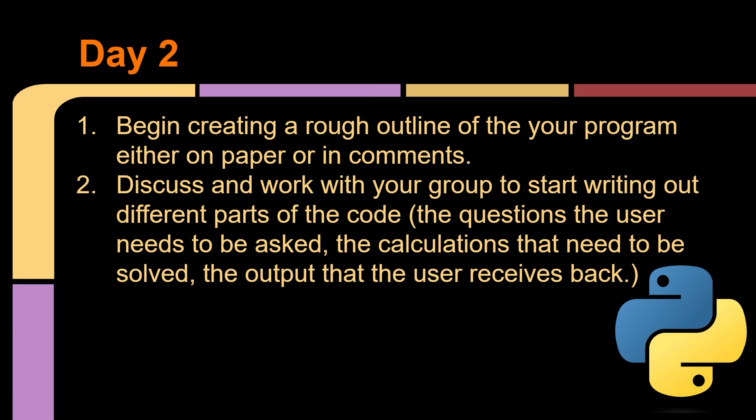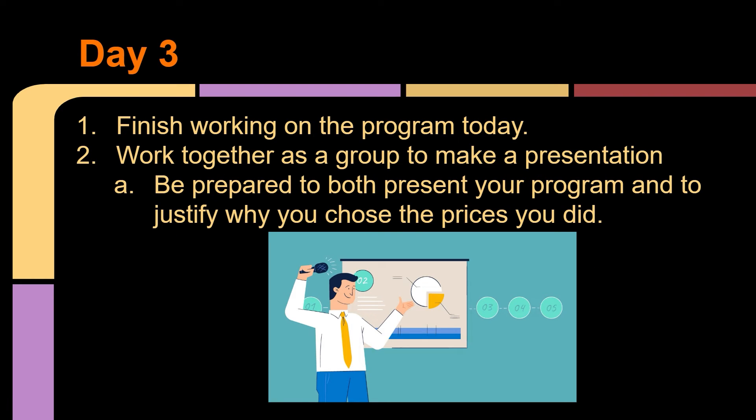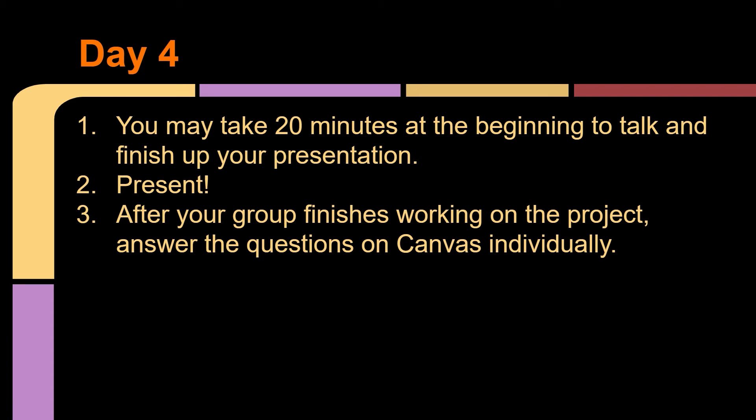Multiple people can work on the same section of code at the same time as well. On day three, finish working on the program. Work together as a group to make a presentation — be prepared to both present your program and to justify why you chose the prices you did. On day four, you may take 20 minutes at the beginning to talk and finish up your presentation, then we're going to present. I don't expect these presentations to be over a minute and a half — about three to five slides. After your group finishes, answer some questions individually in Canvas via a small survey.